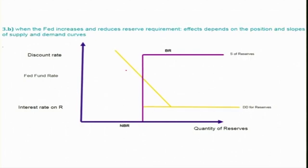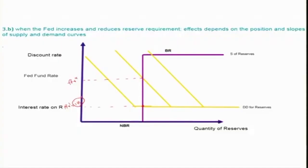What if the Fed reduces the reserve requirement? Starting from the initial equilibrium FFR, reducing the reserve requirement causes the demand curve to shift left, and the new equilibrium position gives a lower Fed fund rate — in fact, the new Fed fund rate may fall to equal the interest rate on reserves. So in this session we have covered three tools: open market operations, the discount window, and changes in reserve requirement. In the next session, we will continue this discussion and see what happens when they change the interest rate on reserves and what the likely impacts are. Thank you, see you in the next session.